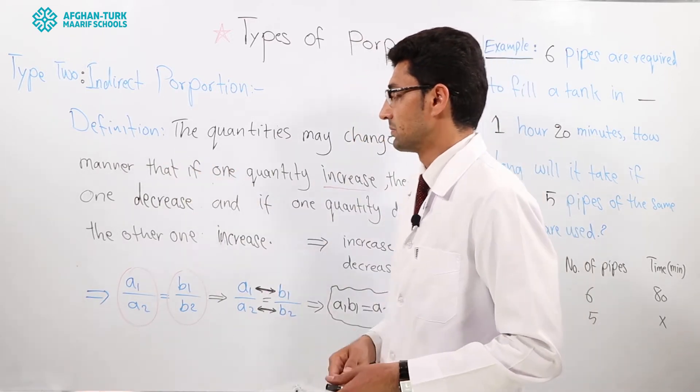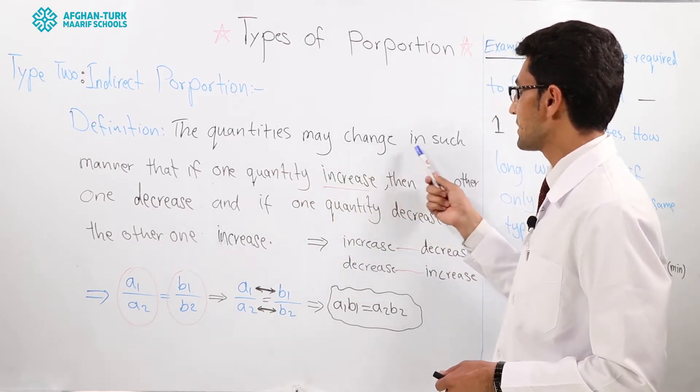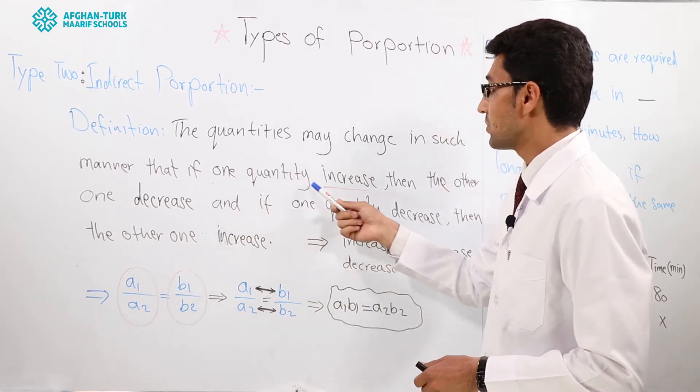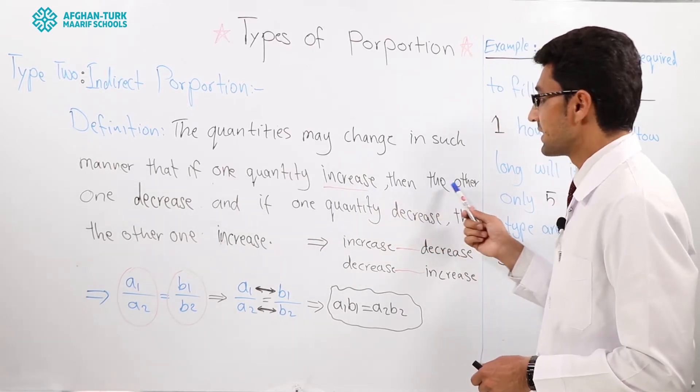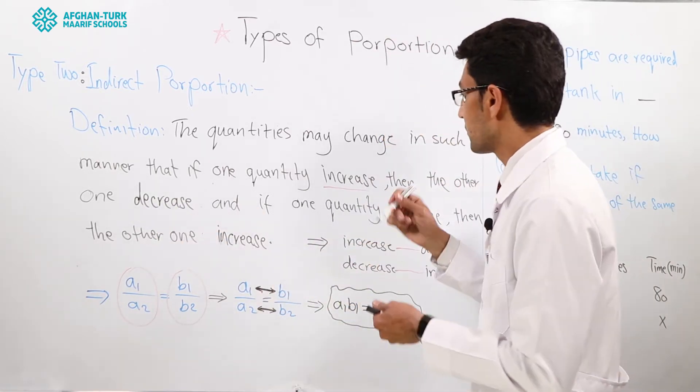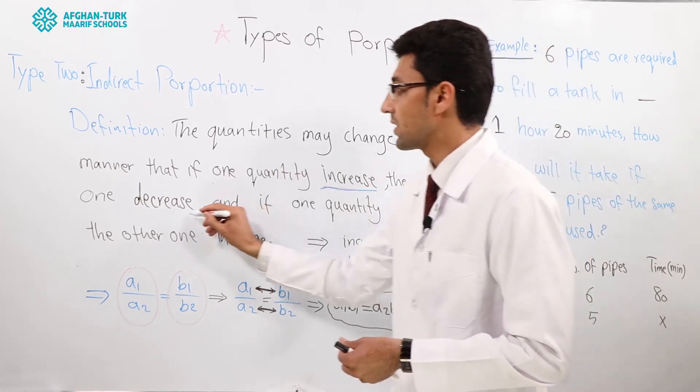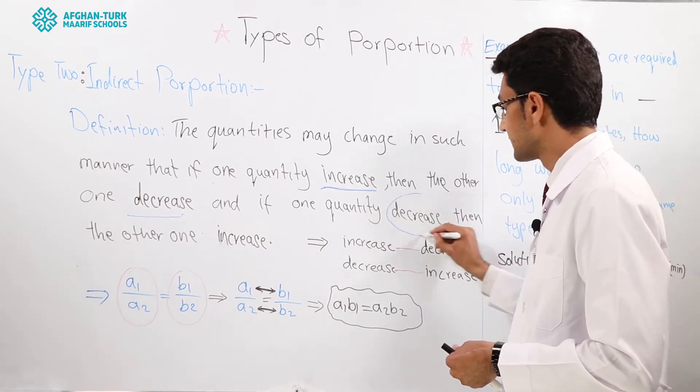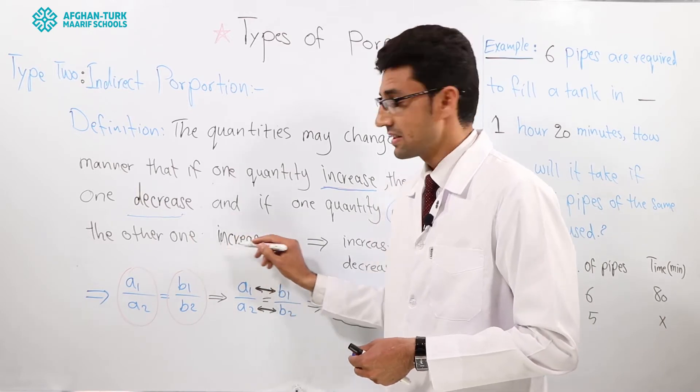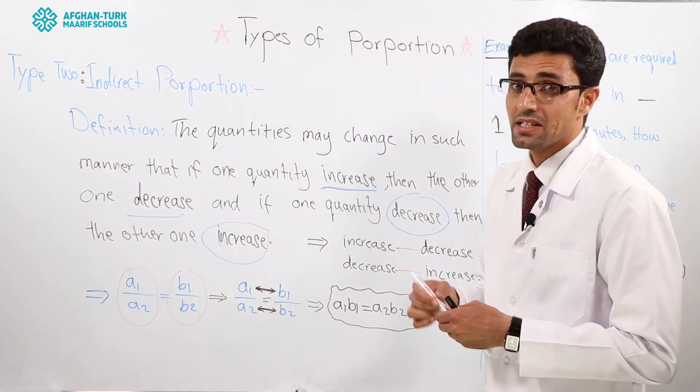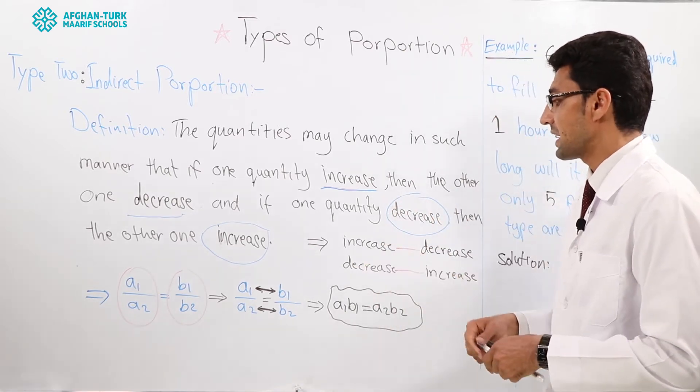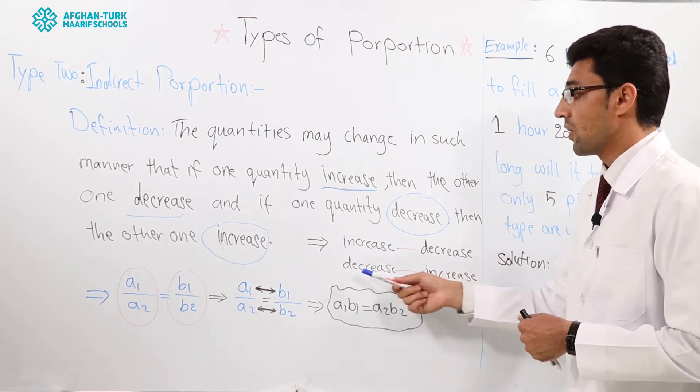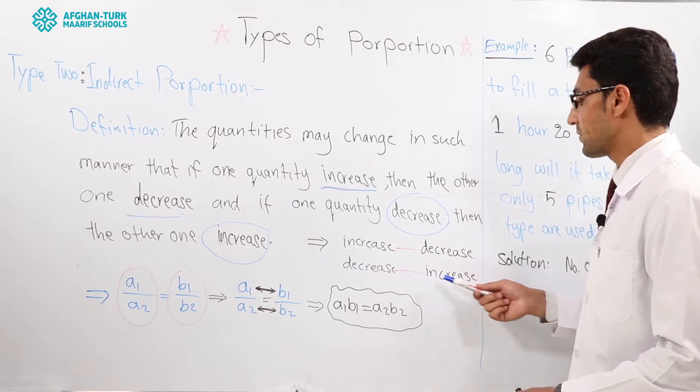At first, definition: the quantities may change in such manner that if one quantity increase then the other one decrease, and if one quantity decrease the other one increase. Simply we can say that one quantity increase, the other one decrease, or if one quantity decrease, the other one will increase.